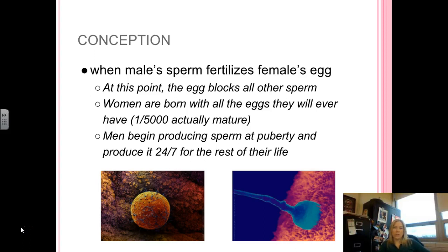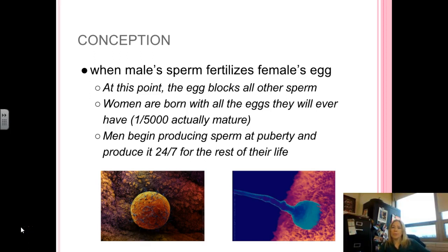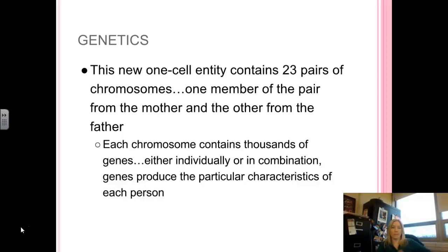This lends credence to the evolutionary perspective that women have to pair wisely — you have a finite set chance of being able to have a child and pass down your genetic material, so you have to be very smart and picky about who you get together with. Men don't begin producing sperm until puberty, and then they will produce it 24/7 for the rest of their life.